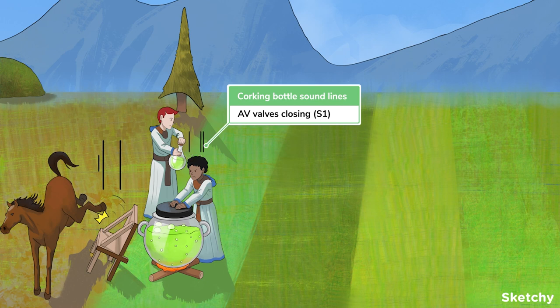Since the semilunar valves, the aortic and pulmonic, are also closed at this point, each ventricle will be closed off from the rest of the cardiovascular system, so no blood will be ejected and the ventricular volume will remain unchanged.